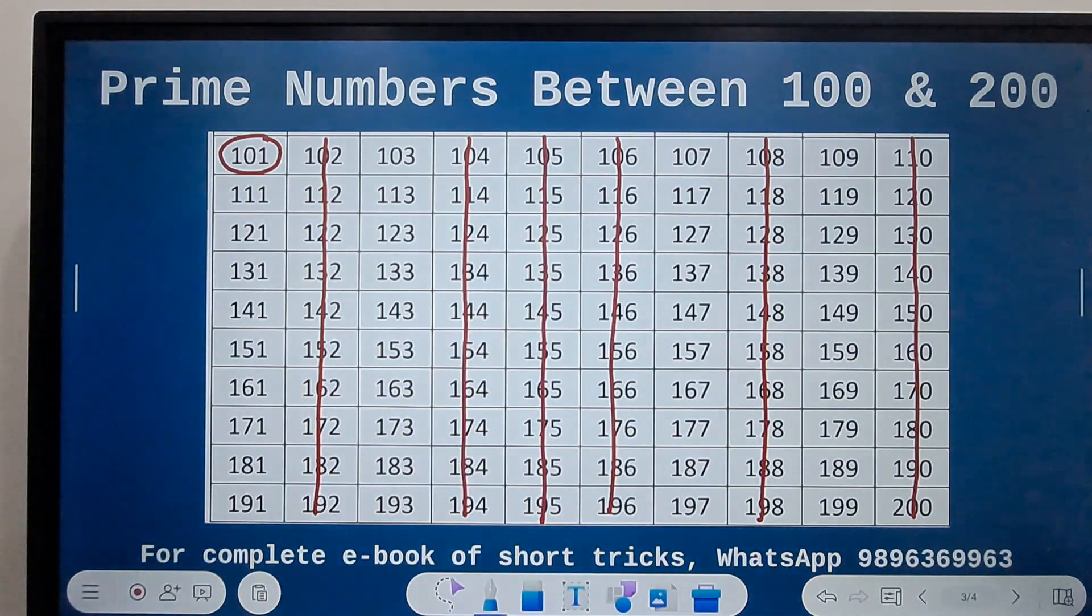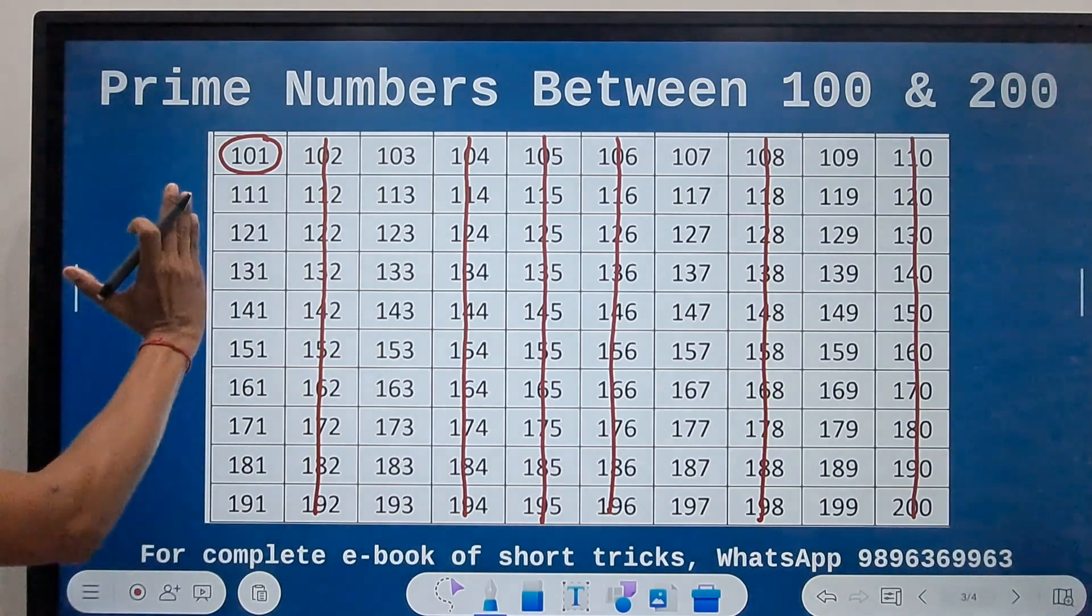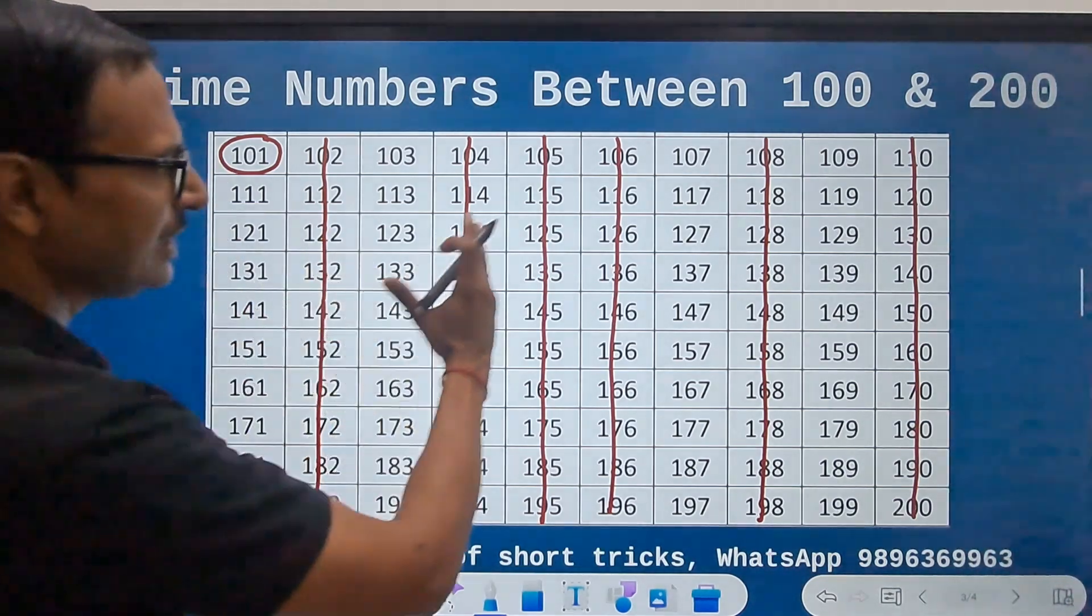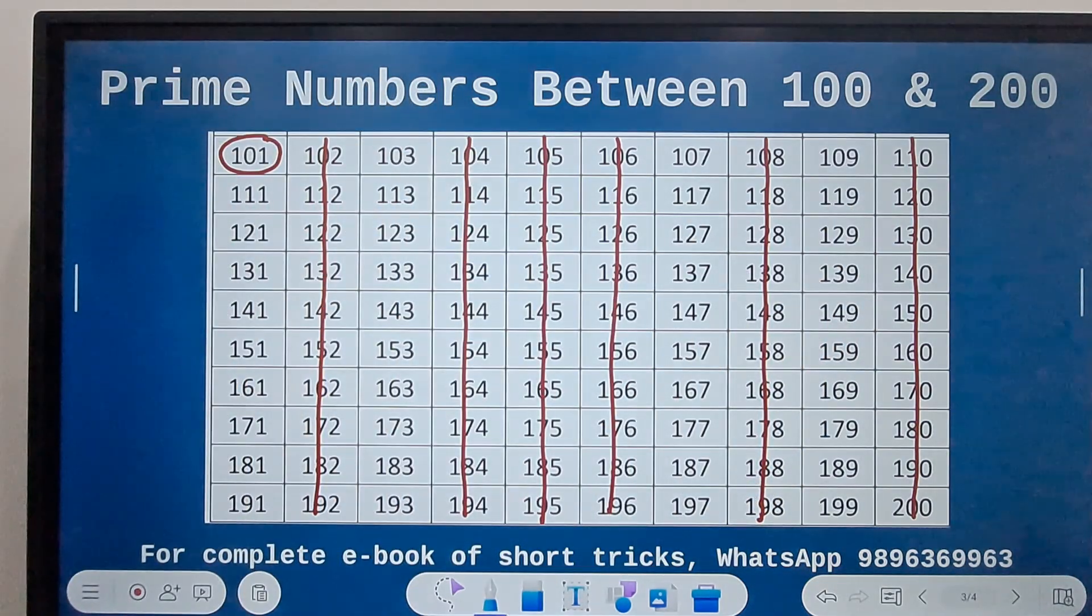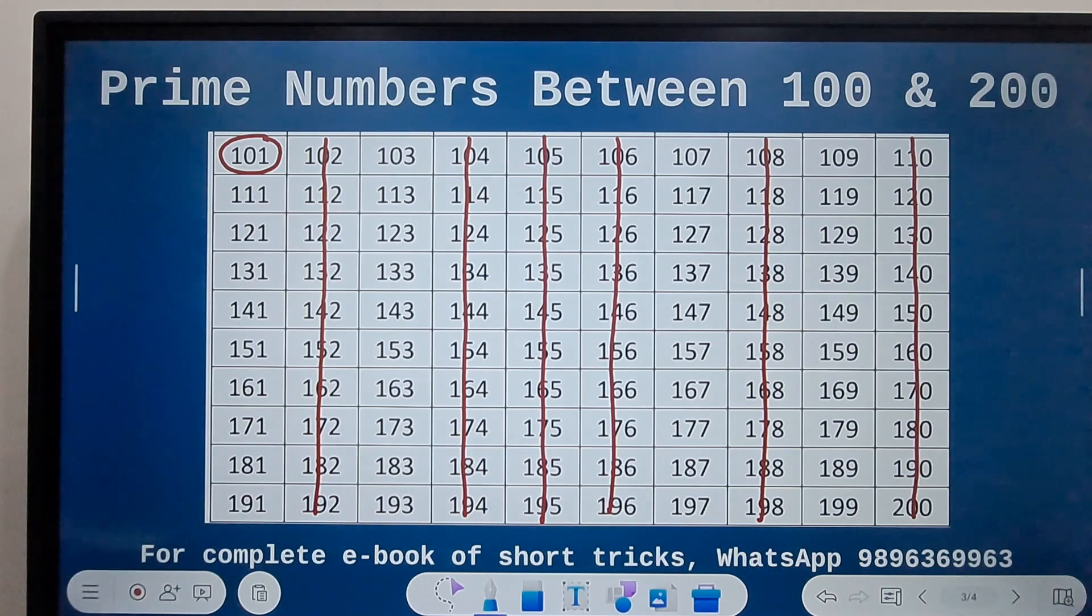Now out of the four columns which are left, the ones ending with 1, then 3, then 7, and 9, out of these we have 21 prime numbers. And now how to find which one of these are going to be prime?